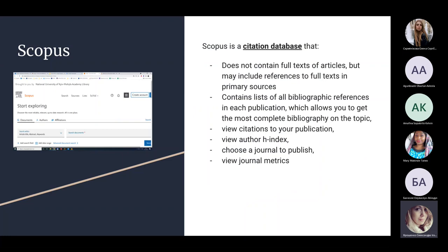What is Scopus? Scopus is a citation database. Sometimes it is also called the scientometric database because it includes some scientometric indicators such as the H-index, CiteScore, and others. Why is it called a citation database? It is called a citation database because the main numbers on which we can rely in tracking research impact are citations. Citations are something that authors receive when their documents are being cited and added to other authors' reference lists.